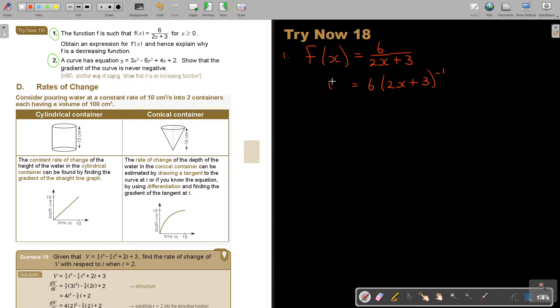Say for example you were doing the long method. I'm just going to make it y. Then y is equal to 6u^(-1). And what is u? u is 2x plus 3. So dy/du is negative 6u to the power of negative 2. And then du/dx is equal to 2.